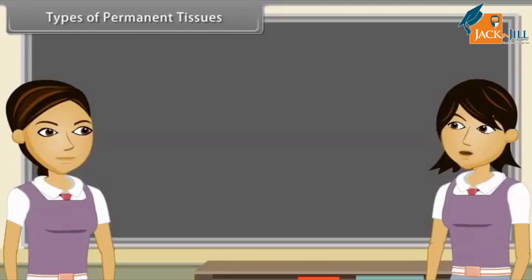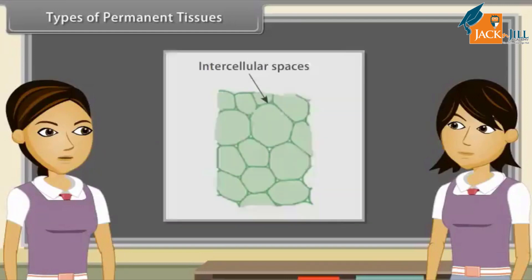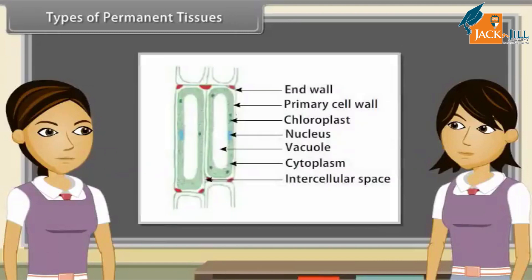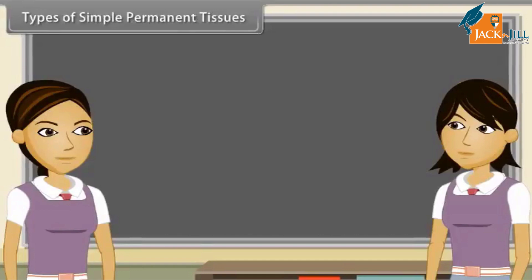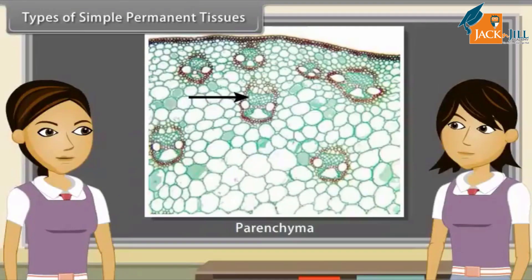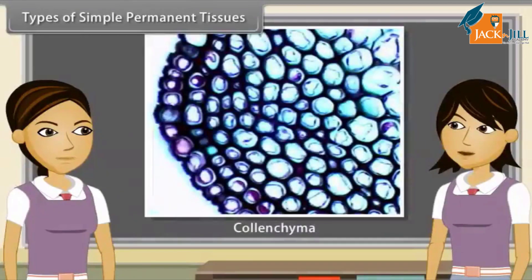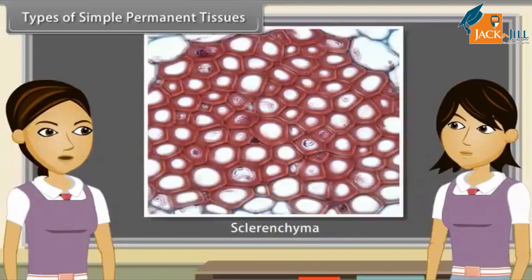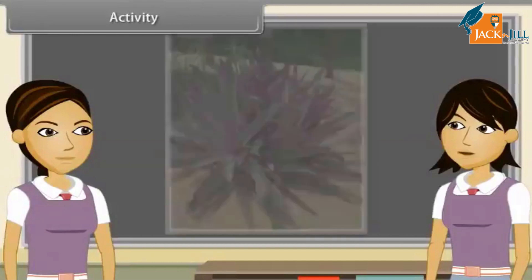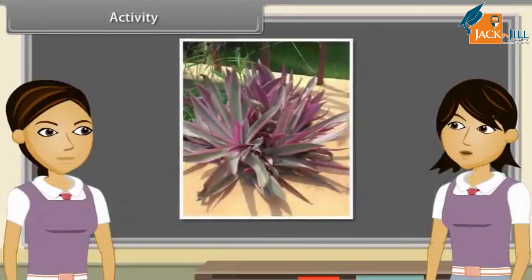Permanent tissues are of two types on the basis of nature of cell: simple permanent tissues and complex permanent tissues. Simple permanent tissues are composed of cells which are functionally and structurally similar. Simple permanent tissues are of three types: parenchyma, collenchyma and sclerenchyma. Parenchyma is made up of cells with thin primary walls that retain their protoplasm. Collenchyma has cells with thick primary walls that retain protoplasm. Sclerenchyma has cells with lignified secondary walls that have lost their protoplasm at maturity — they are dead.